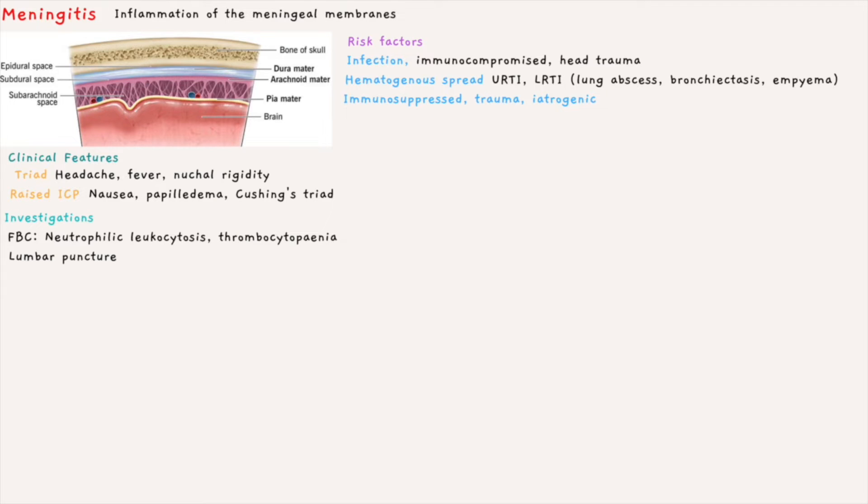To investigate, we do blood count looking for neutrophilic leukocytosis. Thrombocytopenia may be seen if there is disseminated intravascular coagulation.